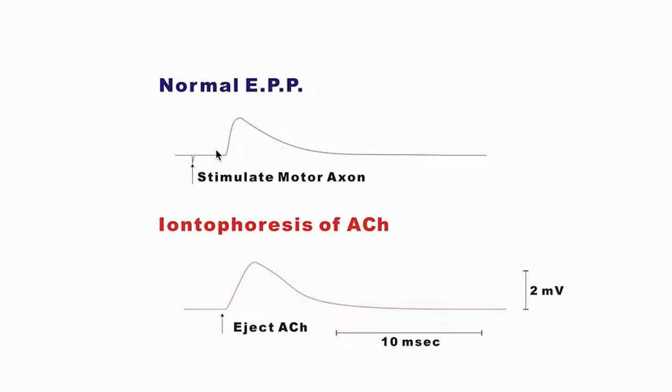The key difference is direct versus indirect effects. When you stimulate the motor axon you must initiate an action potential that propagates to the terminal to release transmitter. In the presence of tetrodotoxin, that action potential cannot be initiated, so the response is blocked — not because TTX blocks the channels underlying the end plate potential, but because it blocks the action potential needed to cause transmitter release. This illustrates an important principle: always ask whether a drug effect is direct or indirect.